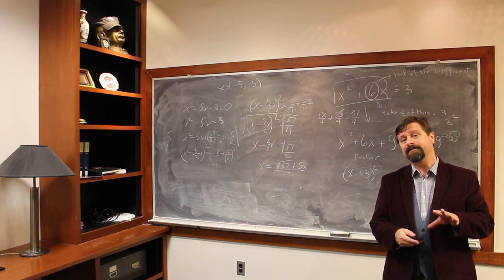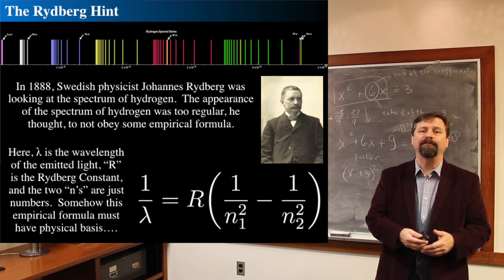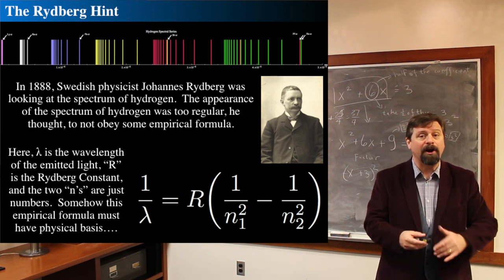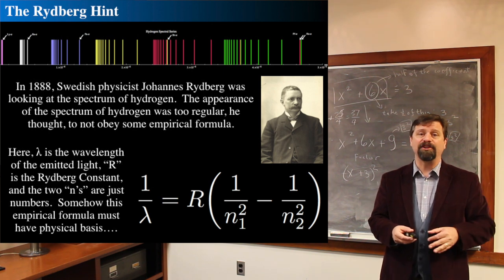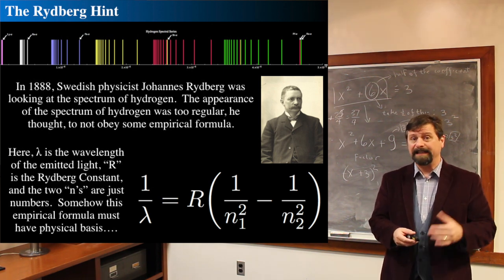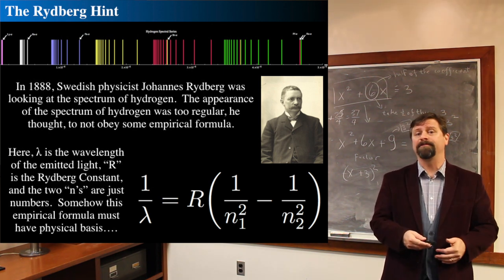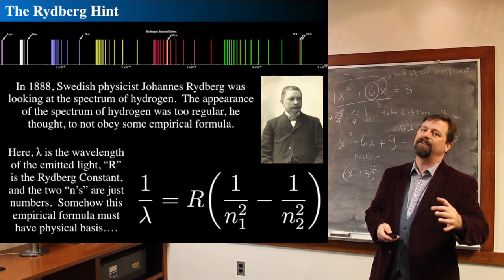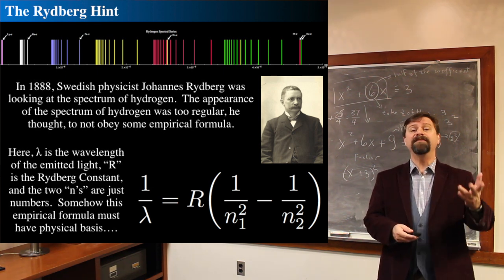Let's take a step back. Last time we looked at Rutherford's version of the atom, which is kind of like little planets orbiting a little star. That's the basic assumption that Rutherford came about when he did his gold foil experiment. But if we go back just a little bit further in time, we find that there's a very interesting hint to things to come.